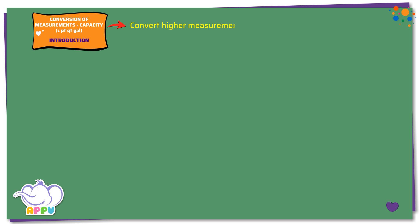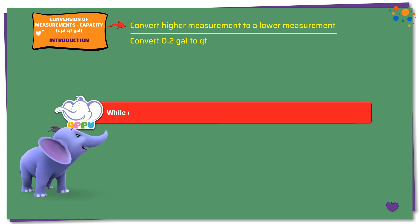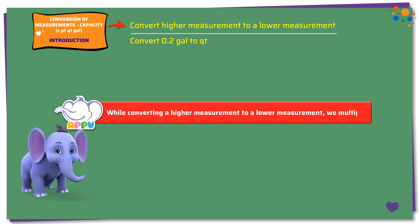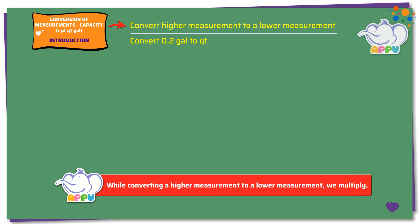Convert higher measurement to a lower measurement. Convert 0.2 gallons to quarts. While converting a higher measurement to a lower measurement, we multiply. Here we need to find how much is 0.2 gallons in quarts. We know that 1 gallon equals 4 quarts.